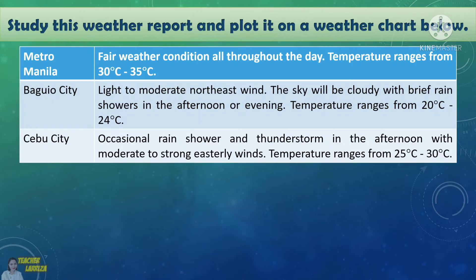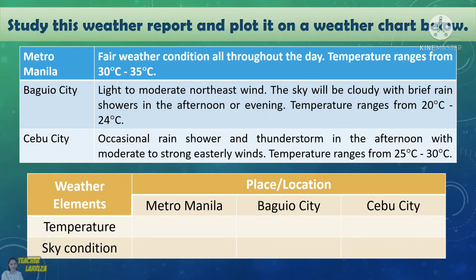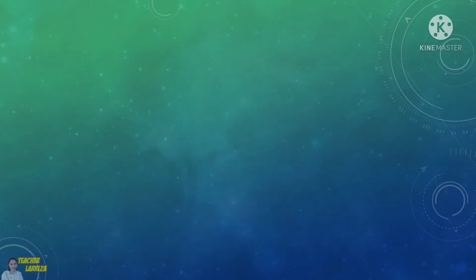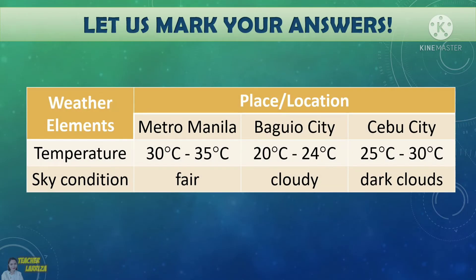Now, let us study this weather report. Para mas mabilis nating malaman ang kondisyon ng panahon sa mga lugar na ito, let us plot the weather condition using the given weather components on a weather chart below. You may try to answer this on your notebook. Do not forget to identify the important weather elements given on the weather report. Let us mark your answers. Here is the correct answer for our weather report activity. The weather elements identified in the report are temperature and sky condition.